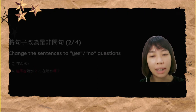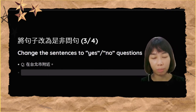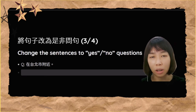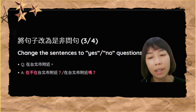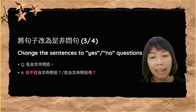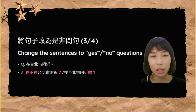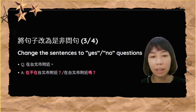好，那我们来看第三个问题。第三个问题是：在台北市附近。那改成是非问句一样有两个方法。最容易的加「吗」，所以第一个答案是：在台北市附近吗？第二个我们可以说：在不在台北市附近。好，那我们来看最后一个问题。